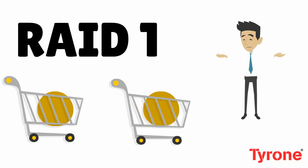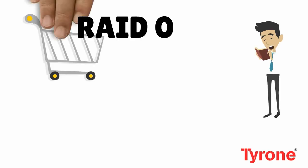With RAID 1, we mirror our drives. We store the same data twice across two or more disks — that's the redundancy. The downside is that there is low optimization of space.